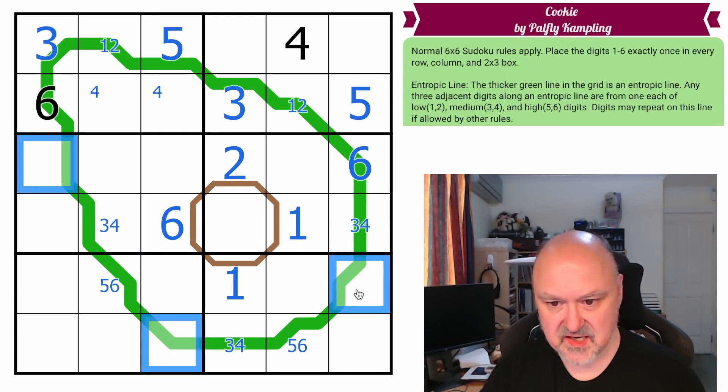And these digits are all 1 and 2. But this 1 sees that, making that a 2. This 2 sees that, making that a 1.